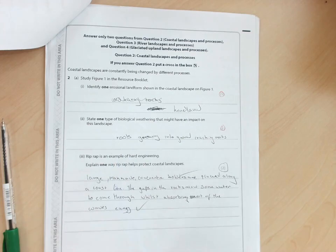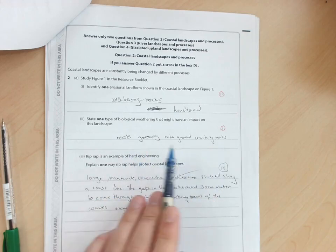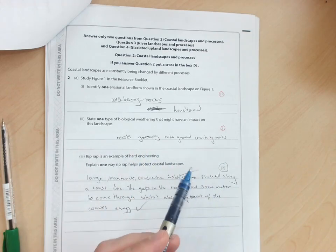State one type of biological weathering that might have an impact on the landscape. She's put roots growing in the ground, cracking the rocks, that's fine. Could have talked about burrowing or acids in the soil.